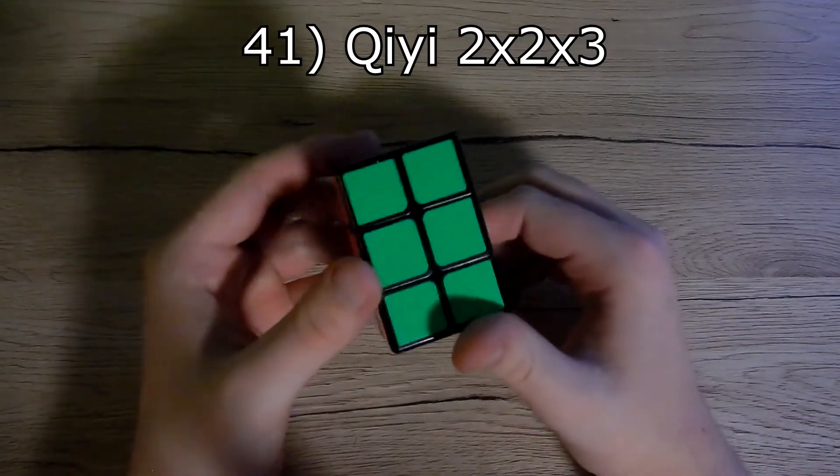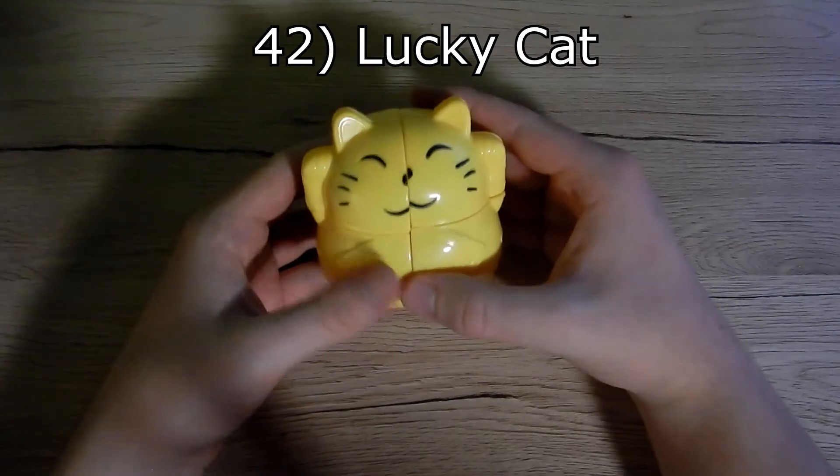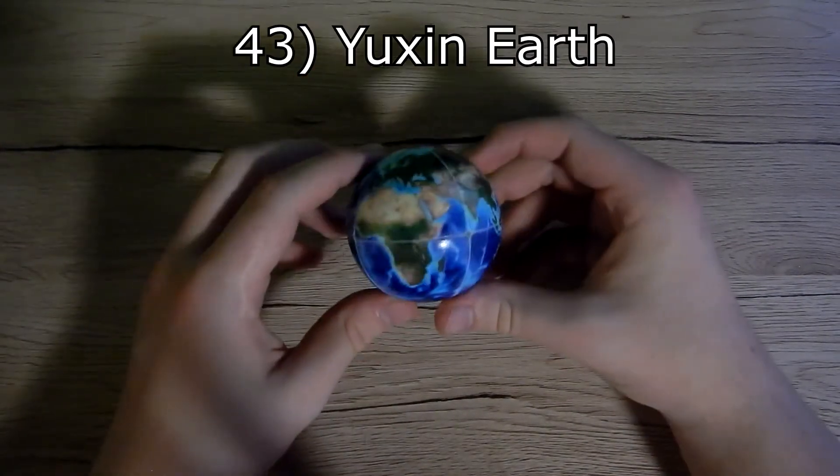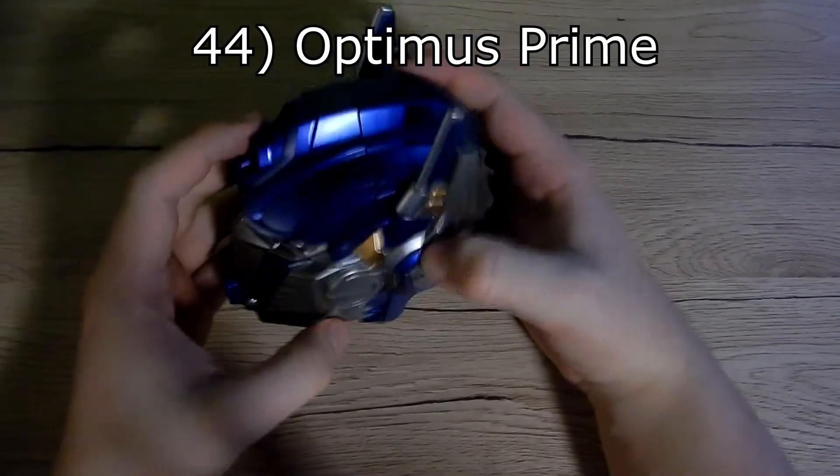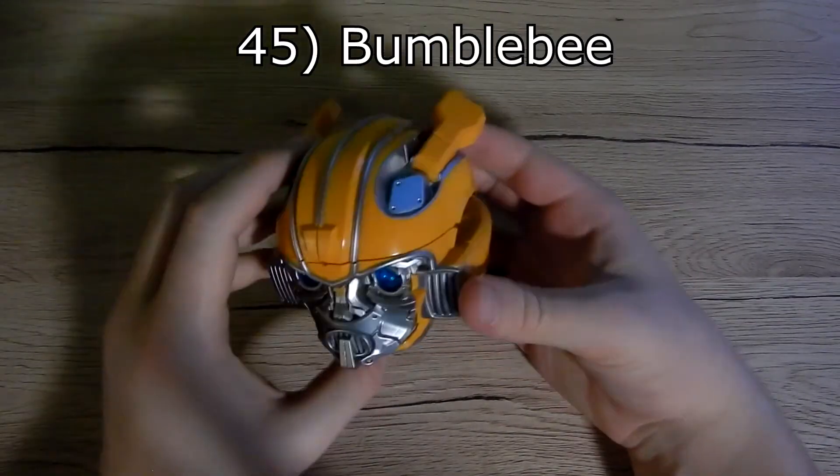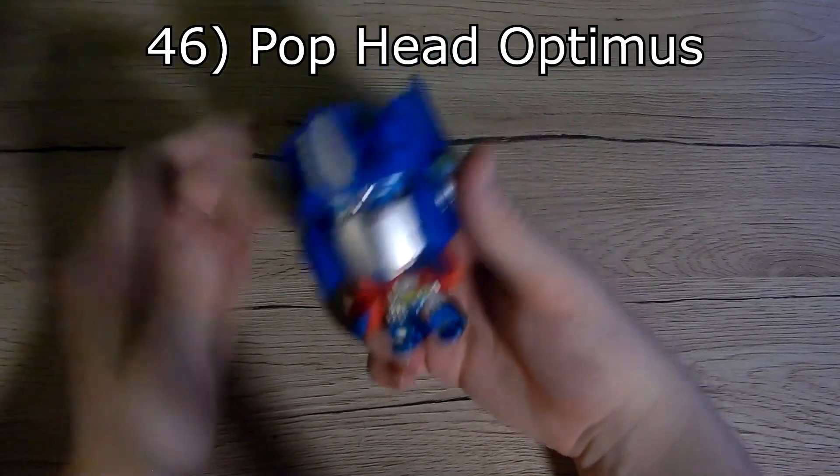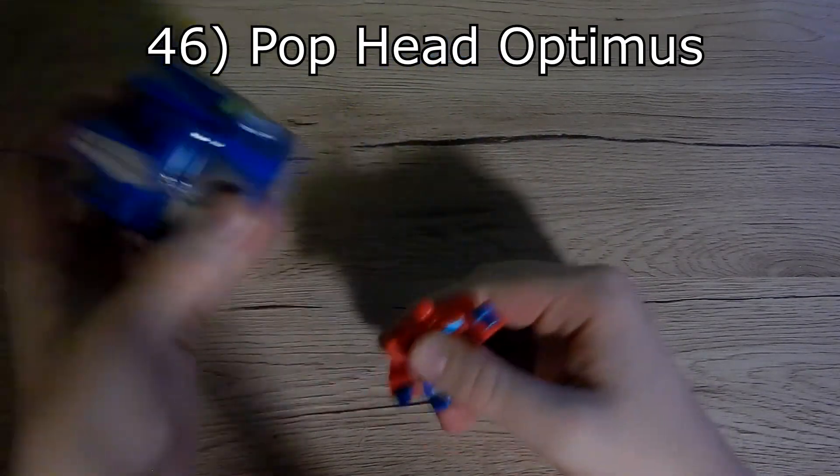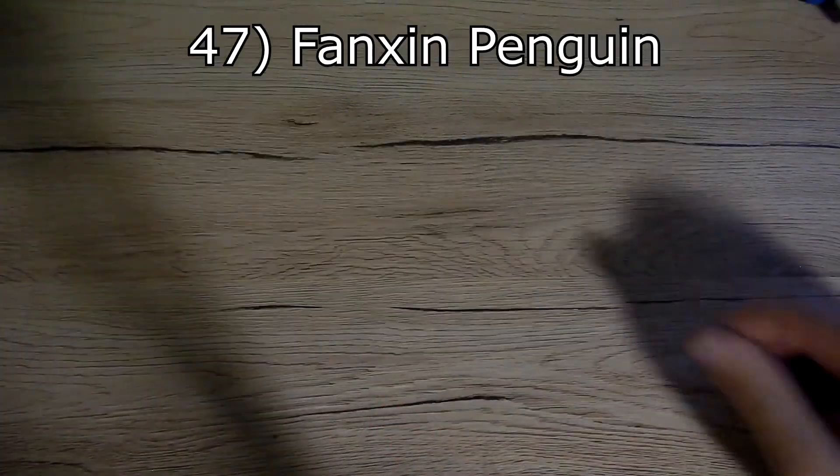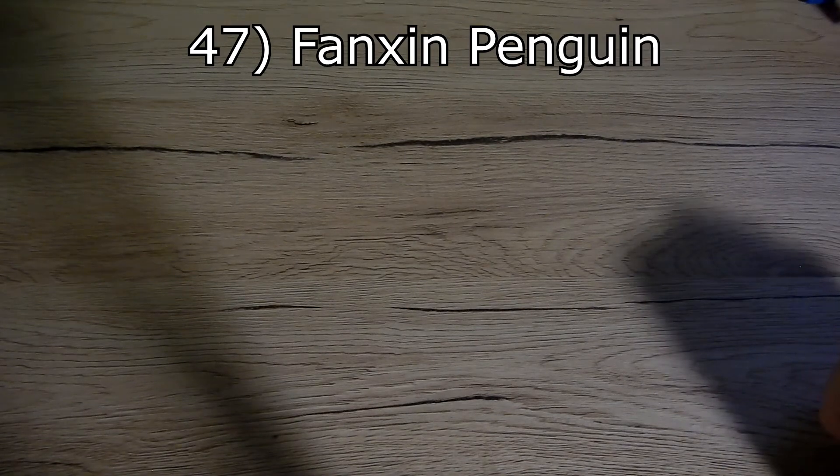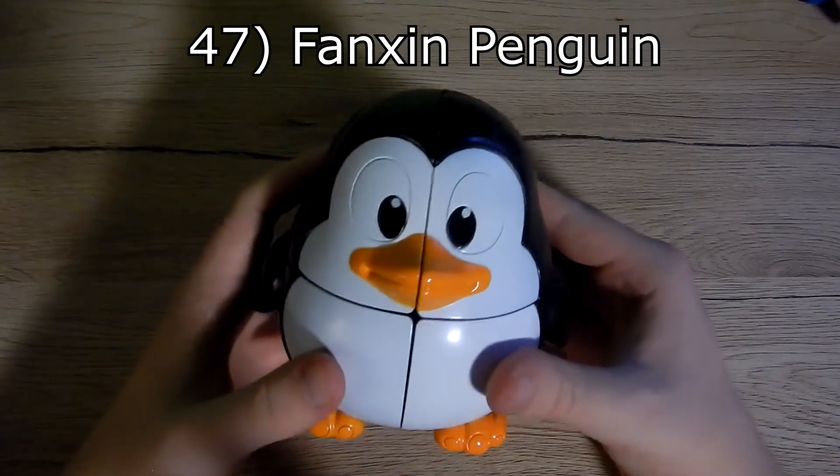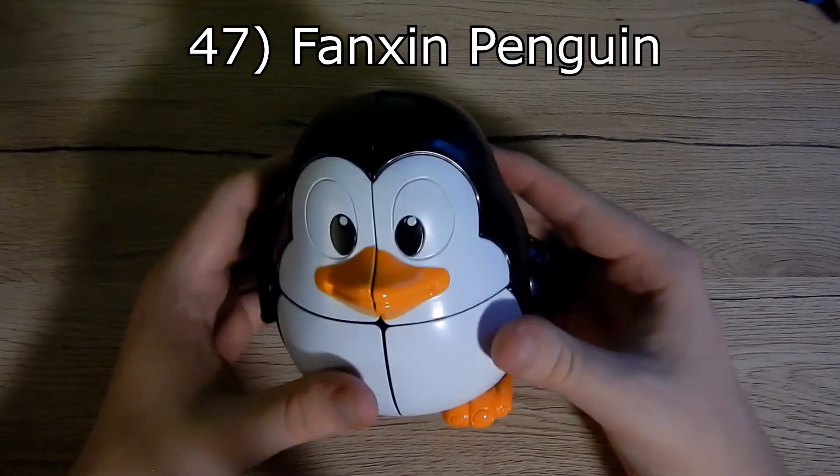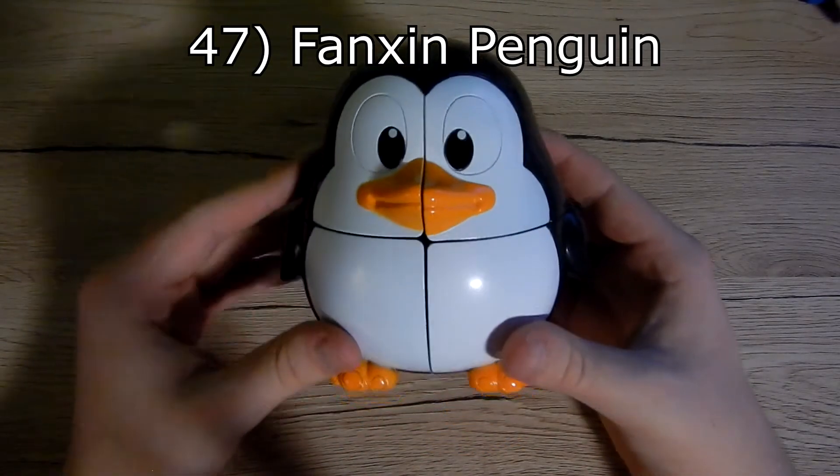Next we have 2x2 shape mods. First, my lucky cat. Then we have Yuxin Earth, Optimus Prime Transformer cube, Bumblebee Transformer cube, Optimus Prime with popping head like this, and my favorite animal from Yuxin animals, penguin. I like it.